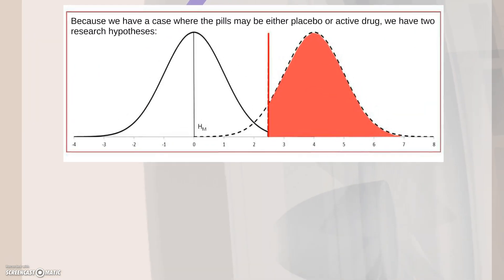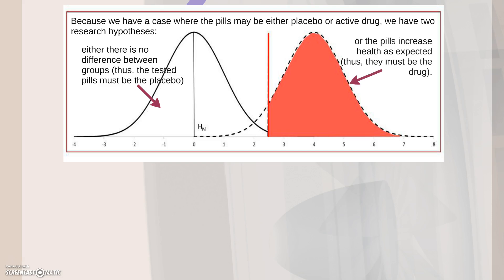Because we have a case where the pills may be either placebo or active drug, we have two research hypotheses. Either there is no difference between the groups, thus the tested pills must be the placebo, or the pills increased health as expected, thus they must be the drug.